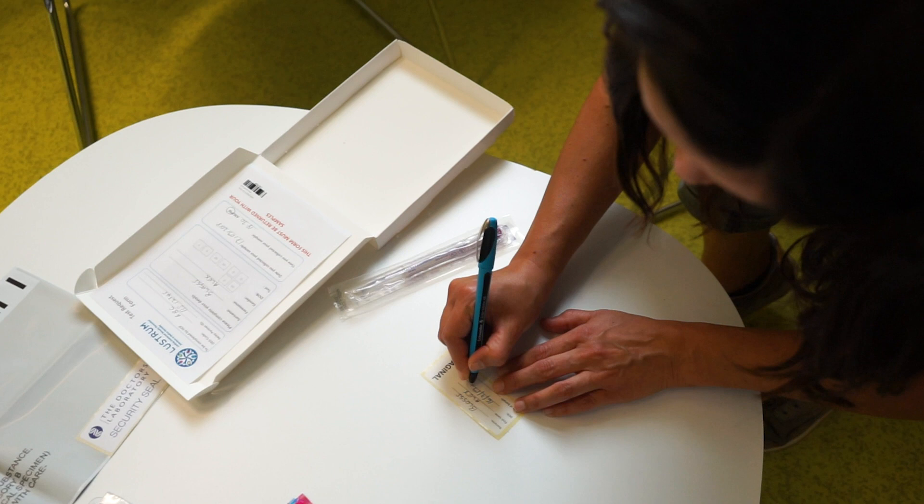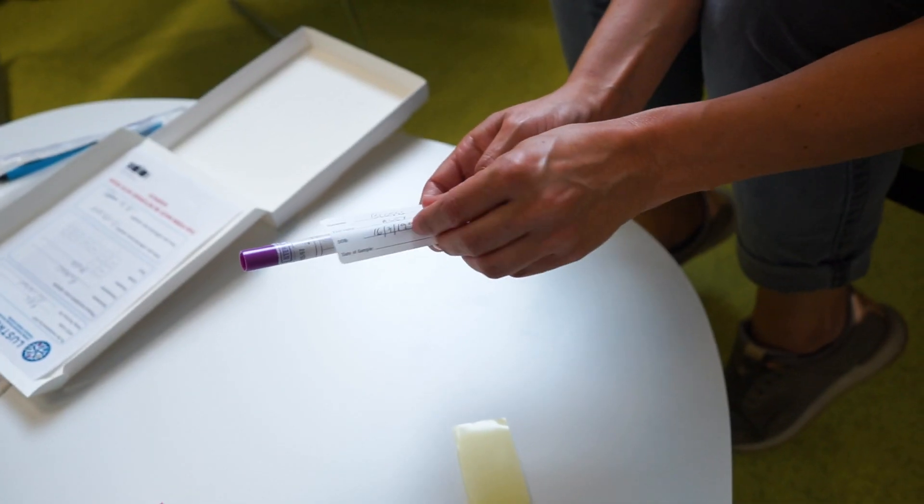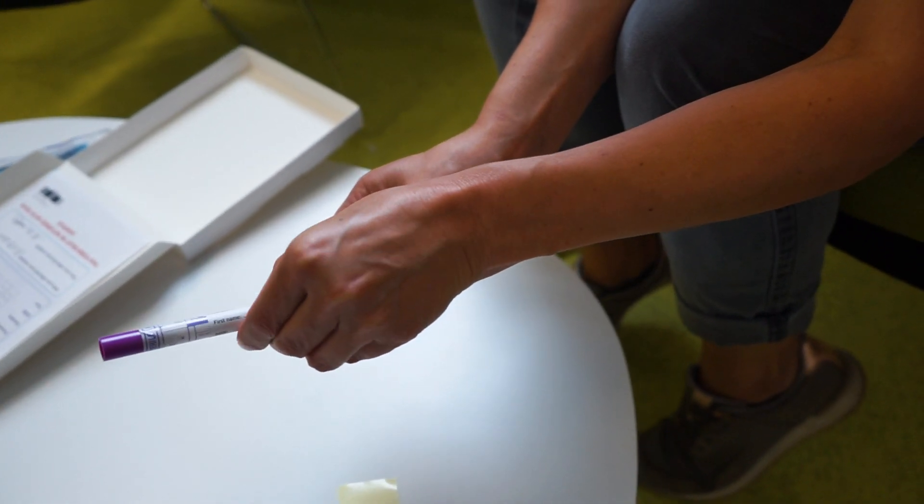Write your details on the label that says vaginal and on your test request form. Stick the label onto your vulvovaginal swab bottle before collecting your sample.